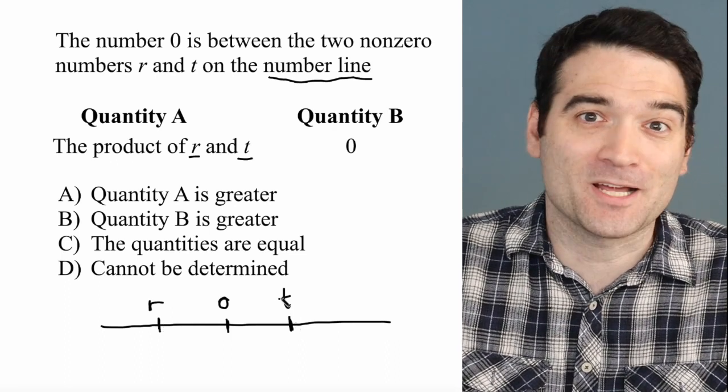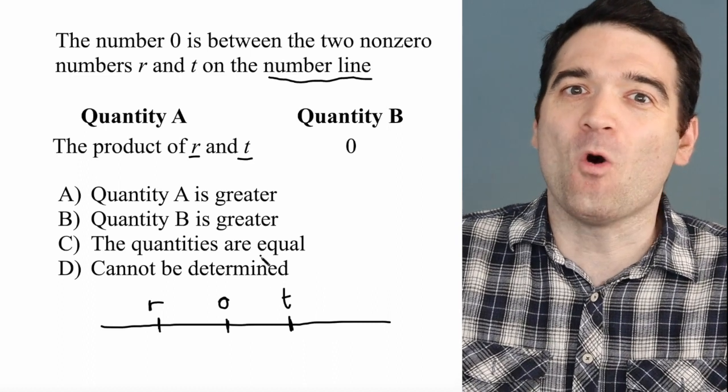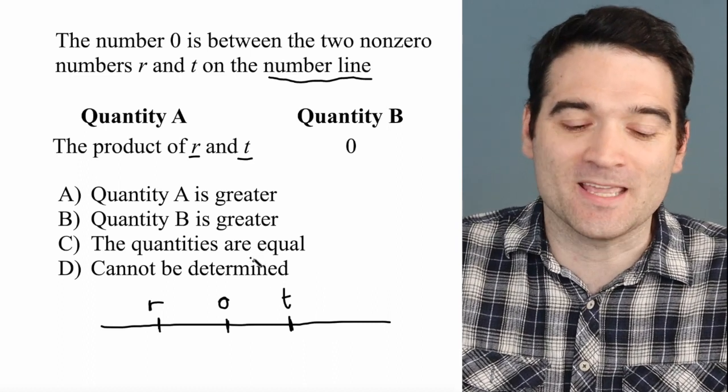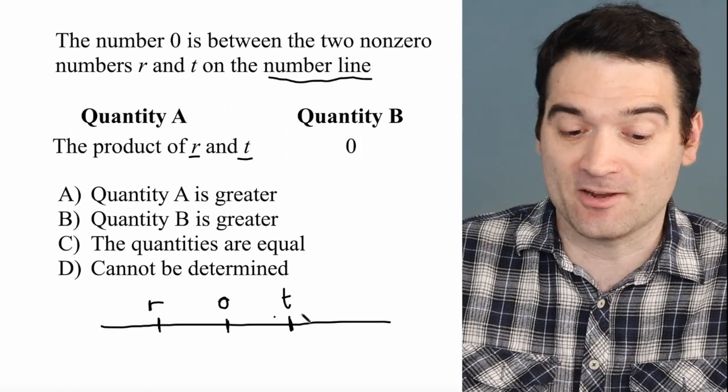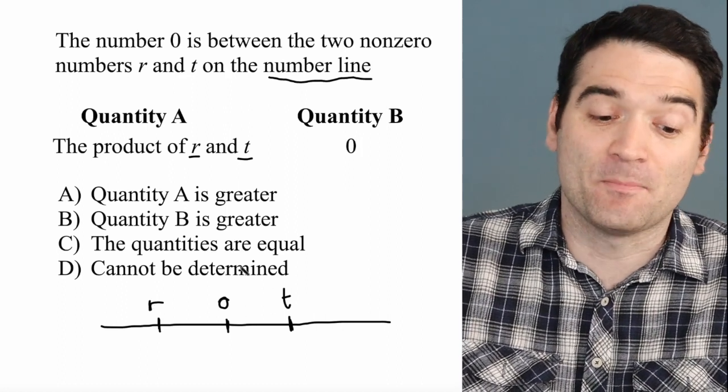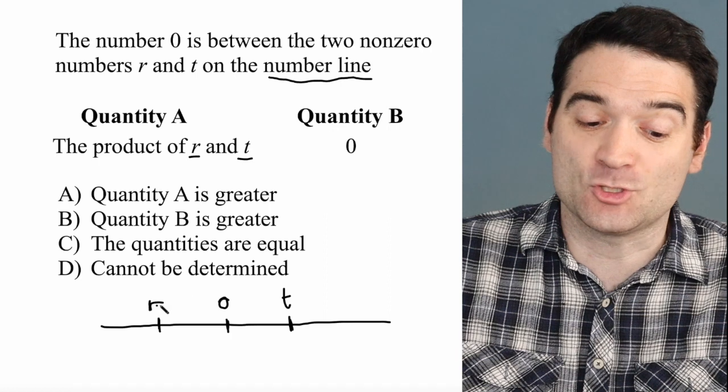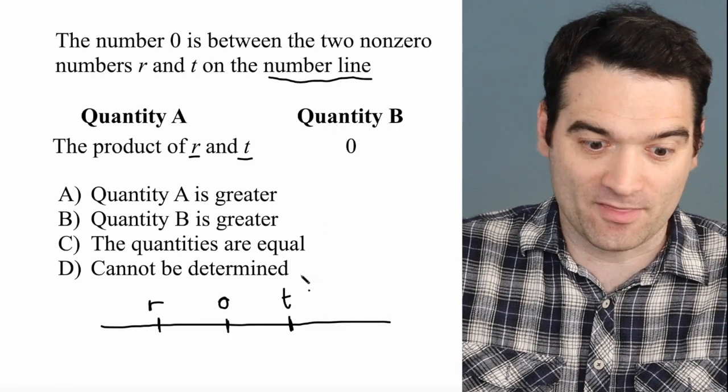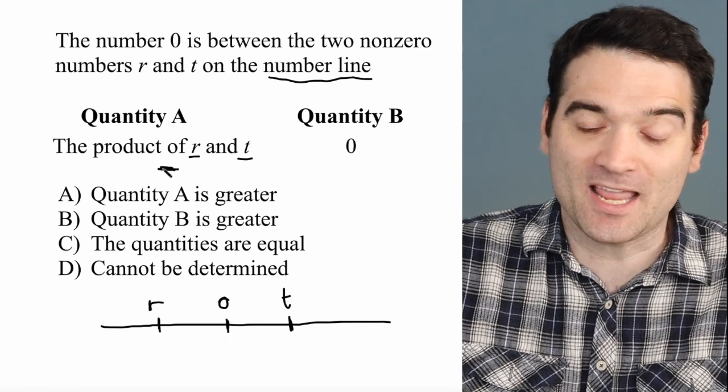A negative number times a positive number is always going to be negative. T could be down here and R could be up here—it really doesn't matter. The bottom line is when we multiply these two non-zero numbers together, it's going to be negative.